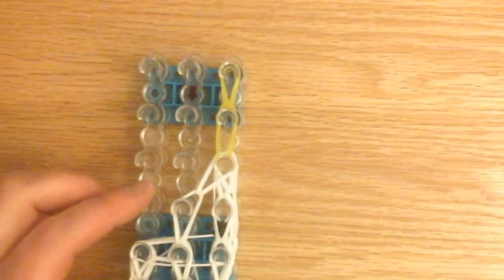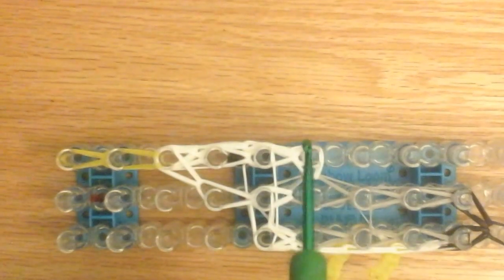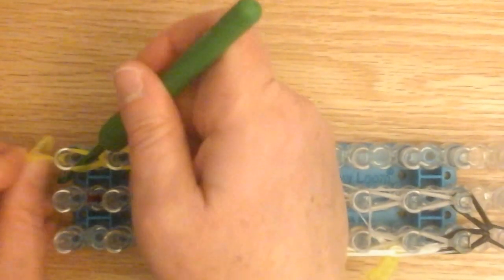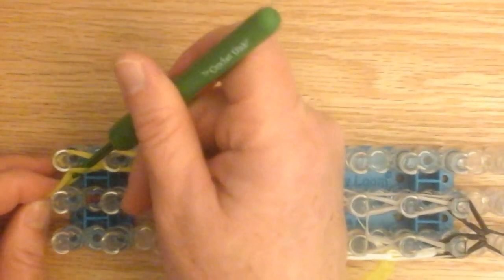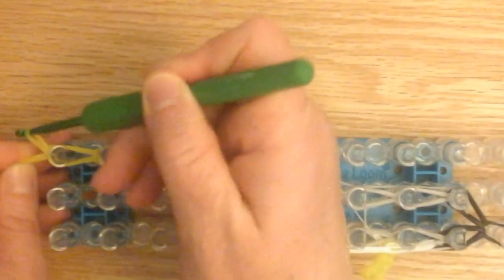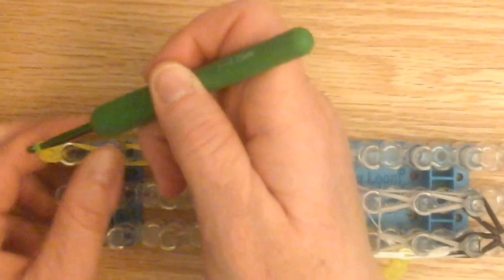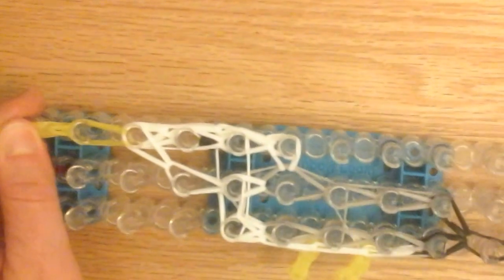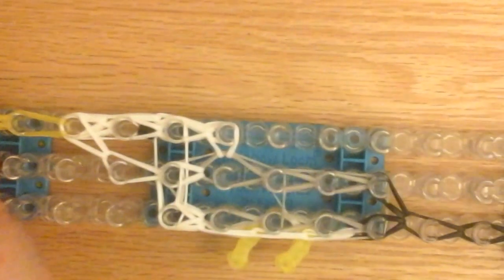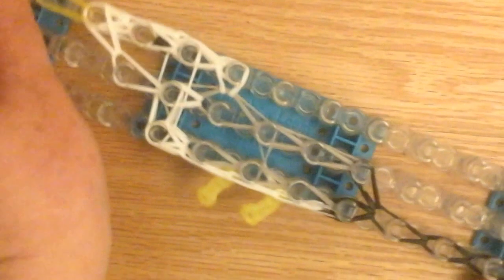Now take two more bands of yellow, then you can slip knot the end. And this is what it should look like. Now we can slowly take it off the loom.